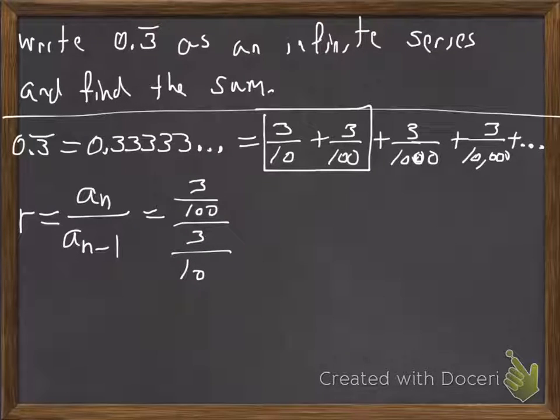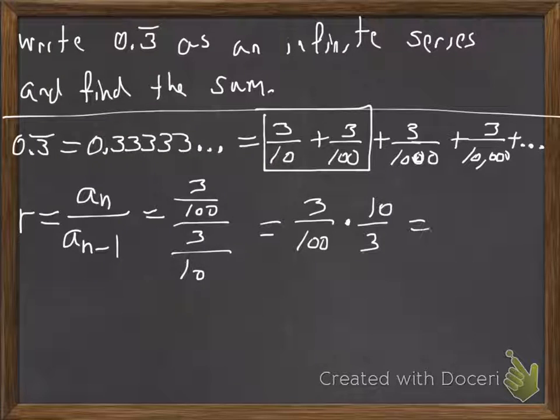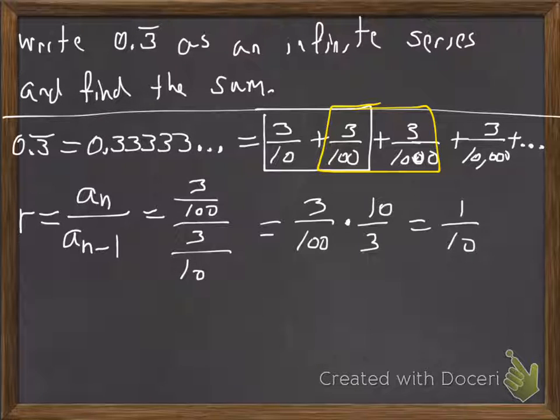And so we're dividing fractions, so we're going to keep, flip, and change. And that's going to give us one-tenth as the common ratio.